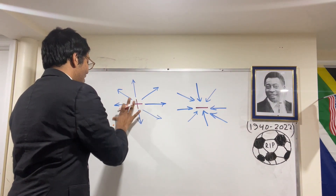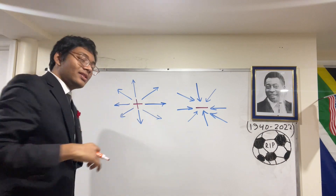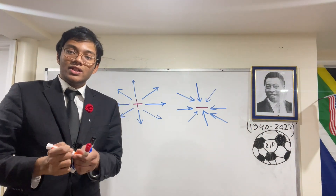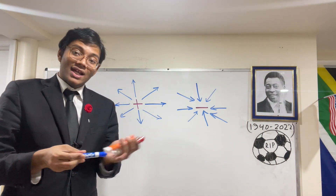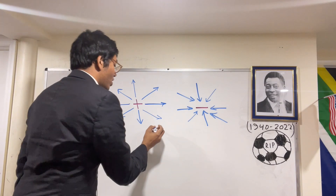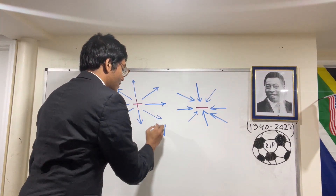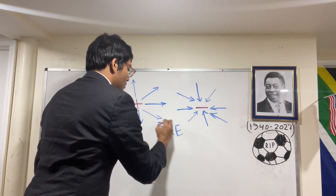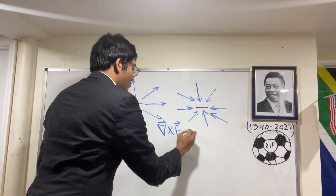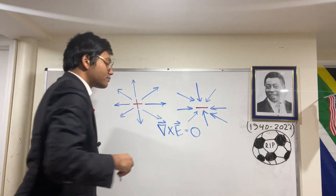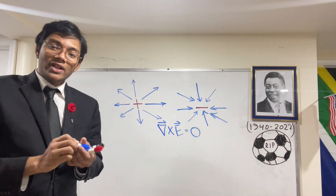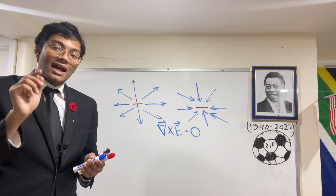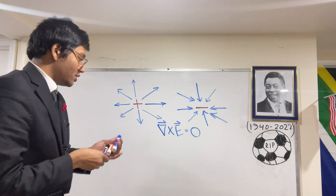And in fact, that tells us that the electric field is a very special kind of vector field. It's a vector field that has the following property: a vector field whose curl is zero. And for such vector fields, they admit a scalar potential function.